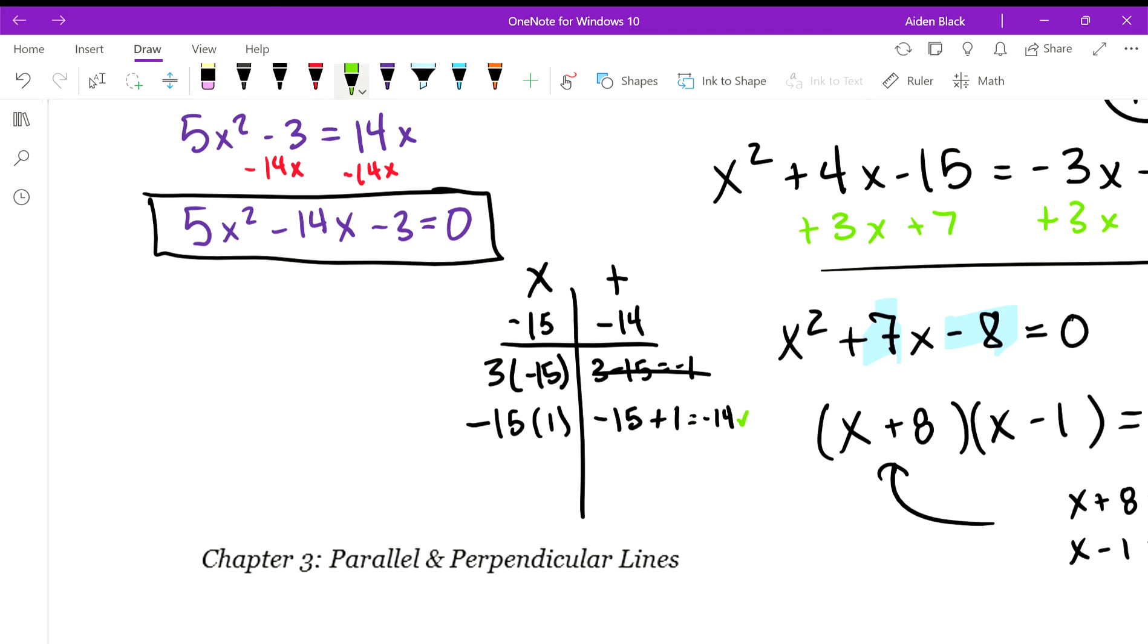So these are the two values we use: -15 and 1. From here I use the box method. The idea is I'm splitting up this quadratic into four terms instead of three, so that I can place them inside the box. So instead of it being 5x²-14x, it would be 5x²-15x+x-3=0. These four terms on the left hand side of the equation is what I will pop into the box.